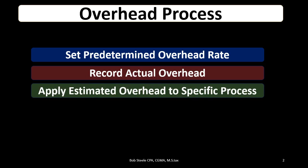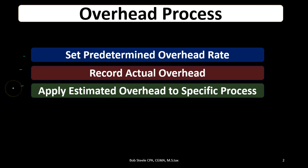We then apply estimated overhead to specific processes — this is an estimate of applying the overhead to the processes. It is only an estimate, so these two items will not match oftentimes. In a perfect world this would be linear: set the rate, record actual, then apply. If we had that ordering it might be possible to apply out the actual overhead. But where there isn't perfect ordering, we have to use some type of estimate, which means the actual overhead will not equal the amount applied out.